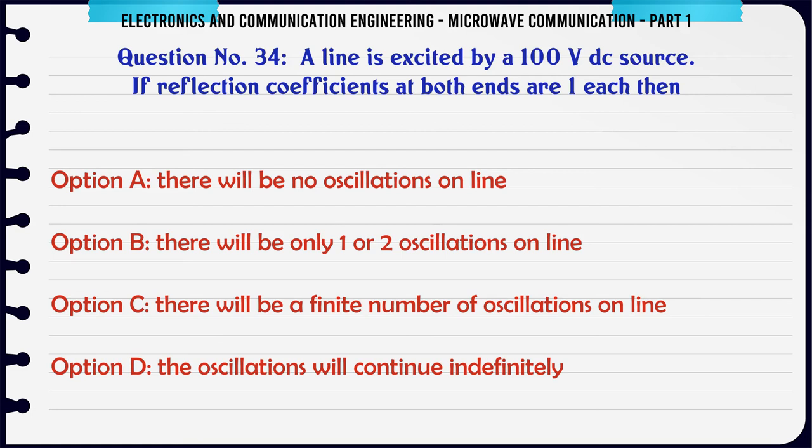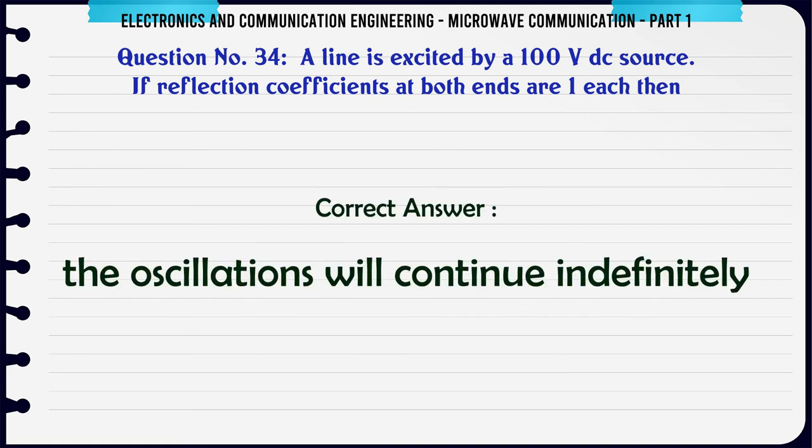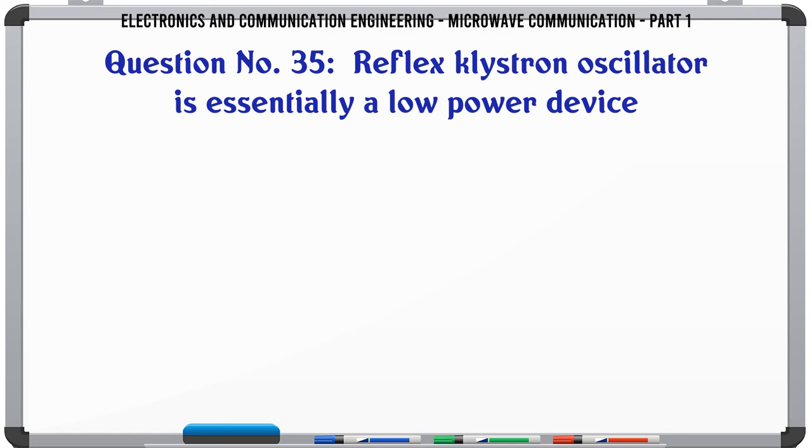A line is excited by a 100 V DC source. If reflection coefficients at both ends are one each then: A. There will be no oscillations online, B. There will be only one or two oscillations online, C. There will be a finite number of oscillations online, D. The oscillations will continue indefinitely. The correct answer is The oscillations will continue indefinitely.